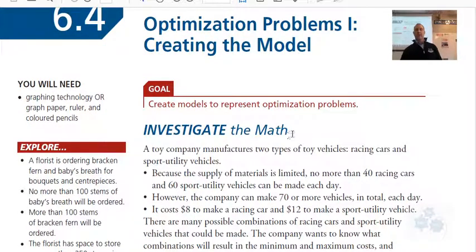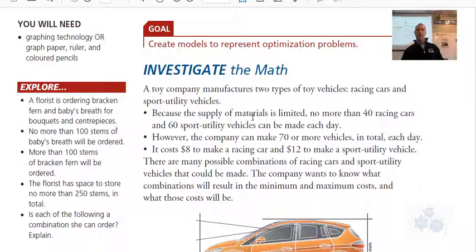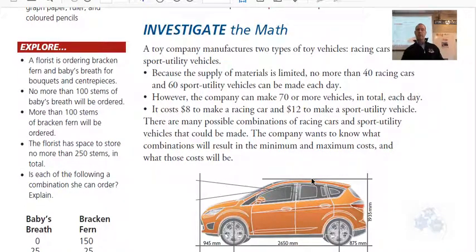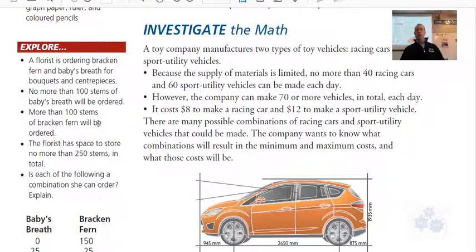If you read through the text on page 324, there are a couple of examples. There's one about a toy car company making two different kinds of cars, and here's a florist ordering different kinds of flowers for arrangements. A florist is ordering bracken fern and baby's breath for bouquets and centerpieces. No more than 100 stems of baby's breath will be ordered — that's a constraint.